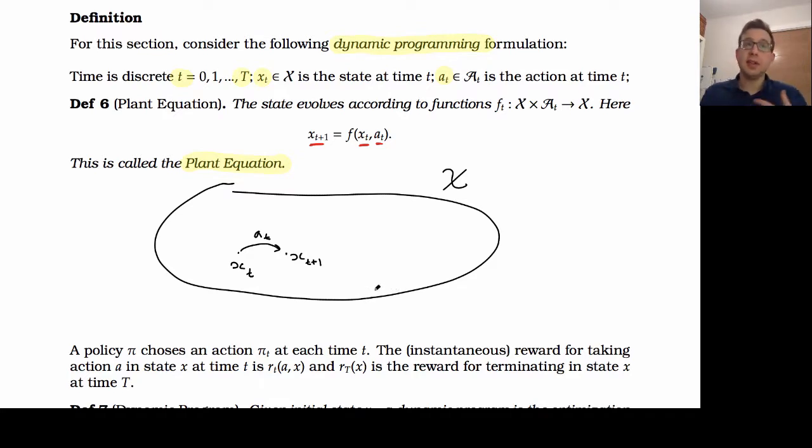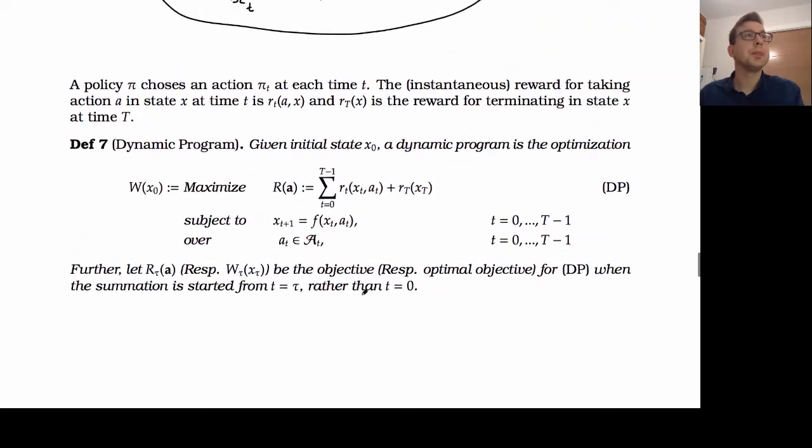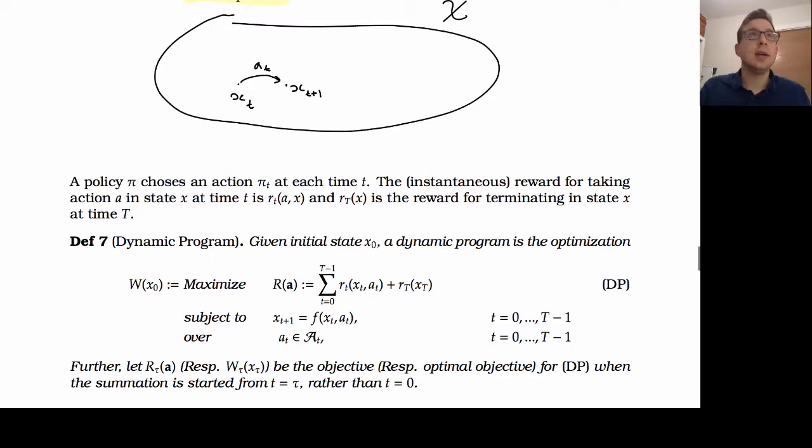And then we're going to consider sequences of actions over time. So in particular, a policy is a set of actions, one for each time. Once we've taken an action, we then are going to record the reward that we receive to taking action. So we're going to let r of t of a of x be the reward that we receive to taking action a when we're in state x at time t.